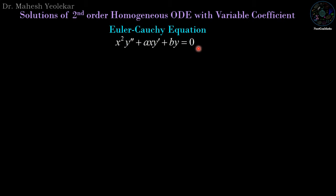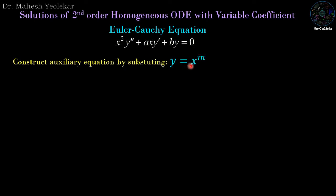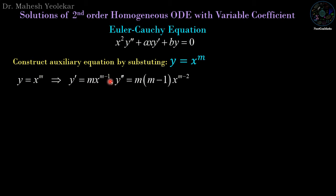To solve this differential equation we need to generate the auxiliary equation, and for that we substitute y equal to x power m. So y dash is equal to m times x power m minus 1, and y double dash is equal to m times m minus 1 times x power m minus 2.